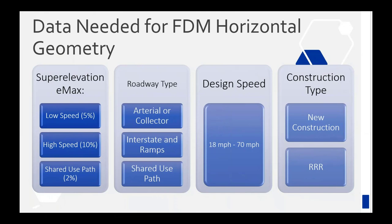Let's look at the data we need to collect for the FDM for horizontal geometry. There are a few considerations. There are two different types of superelevation — the max superelevation rates. You have low speed and high speed for roadways. For shared use paths, they don't really get superelevated, but you can do a 2% either way, so you could effectively have a superelevation on those. So really there are three if you count shared use paths.